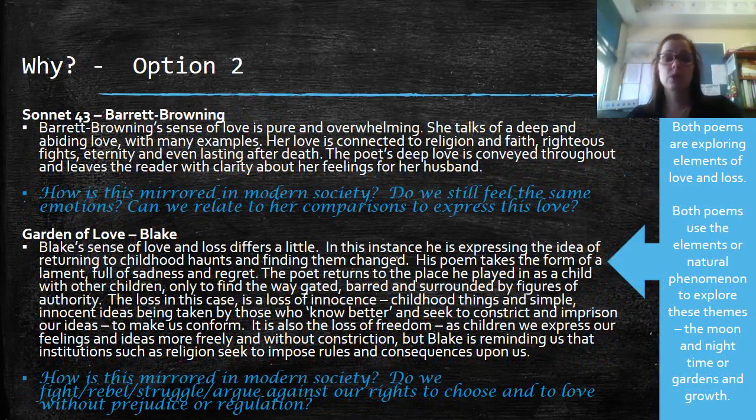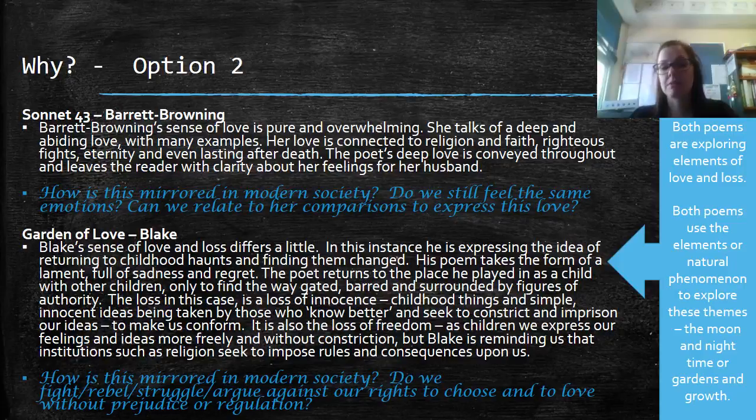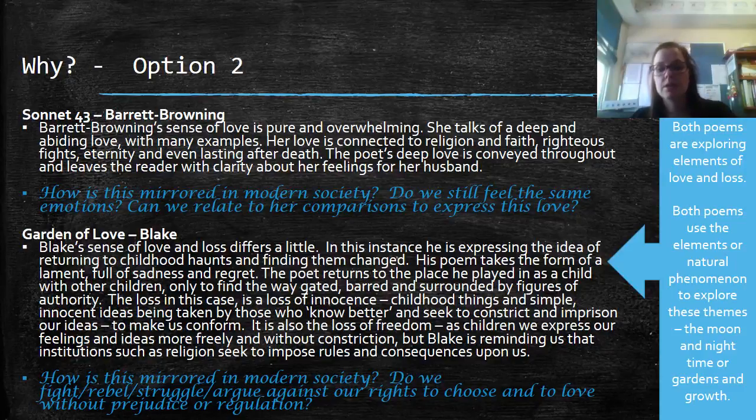Option two was Sonnet 43 by Barrett Browning and Garden of Love by Blake. Both poems are exploring the elements of love and loss. Here you might like to look at the natural phenomenon to explore these themes, the moon and night time or gardens and growth.